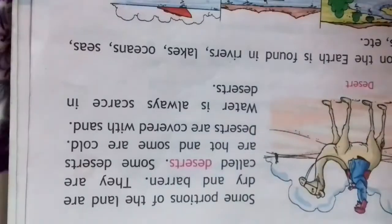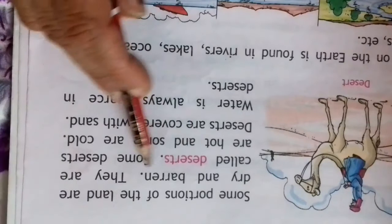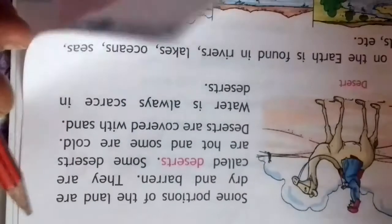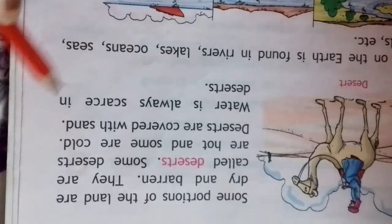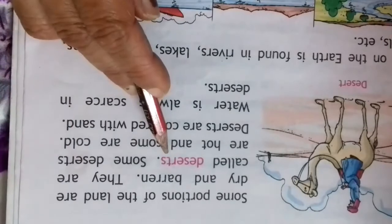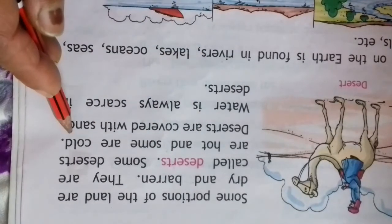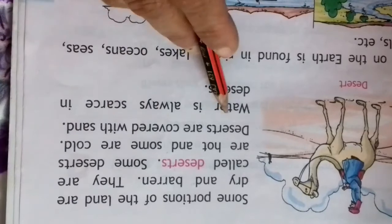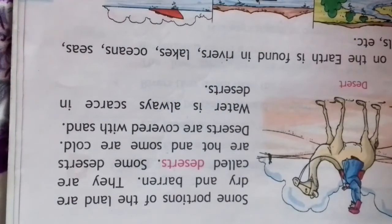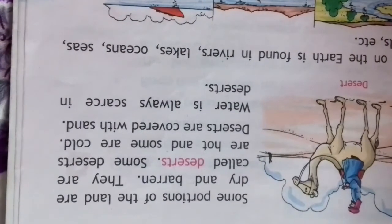Some portions of land are dry and barren, which we call deserts. Some deserts are hot and some are cold. Deserts are covered with sand. Water is always scarce in the desert.